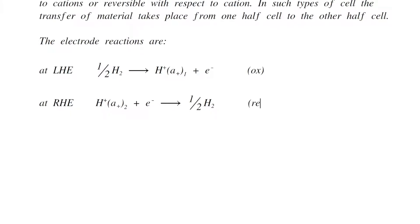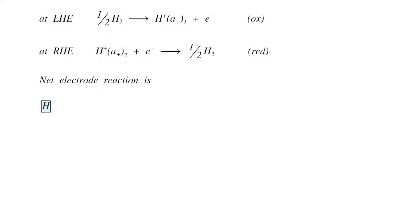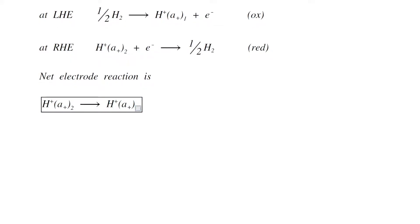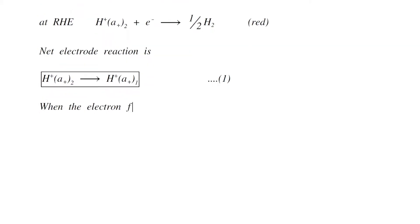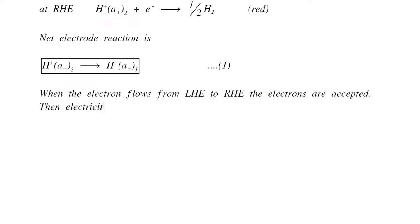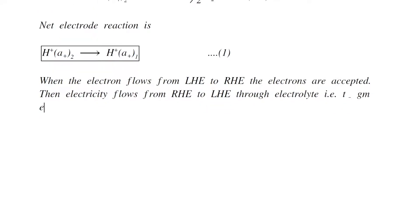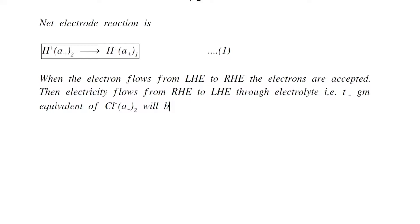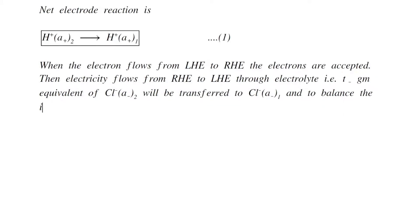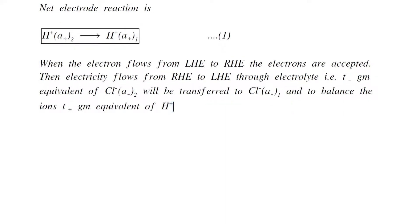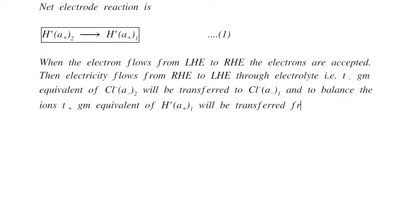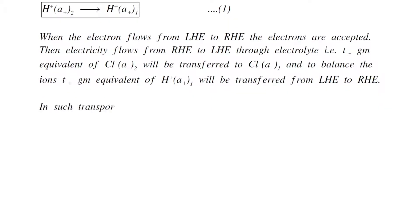At the right-hand electrode, H+ ions of activity a2 combine with electrons, producing half of the hydrogen gas — this is the reduction reaction. The net electrode reaction is that hydrogen ions of activity a2 are converted into hydrogen ions of activity a1 (equation 1). When electrons flow from the left to the right electrode, electricity flows from right to left through the electrolyte: t-minus gram equivalents of chloride ions of activity a2 are transferred, and t-plus gram equivalents of H+ ions of activity a1 are transferred from the left-hand electrode to the right-hand electrode.